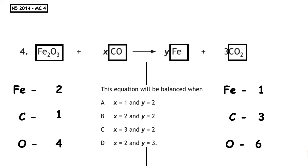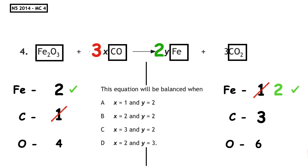Starting at the top: how many irons on the left? Two. On the right? One. We multiply by two, putting a big 2 in front of the iron. Two times one is two — irons balance, tick them off. How many carbons on the left? One. On the right? Three. We multiply by three, putting a big 3 in front of the CO. One carbon inside times three is three. How many oxygens inside? One — one times three is three. I'll note those oxygens above the CO.